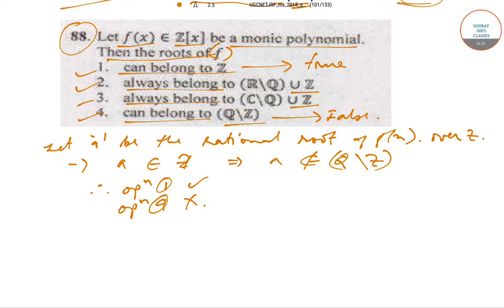Now let us consider another monic polynomial. Consider f(x) = x² + 1, which belongs to Z[x]. The roots of this: x² + 1 = 0.